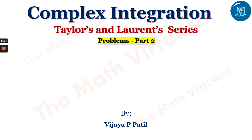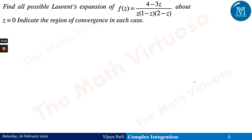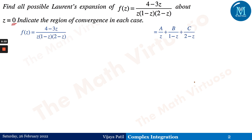Hello and namaste. In continuation with complex integration, we are dealing with Taylor's and Laurent series, going ahead with different kinds of problems. This is part two: find all possible Laurent expansions of f(z) = (4 - 3z) / (z(1 - z)(2 - z)) about z = 0, and indicate the region of convergence in each case.